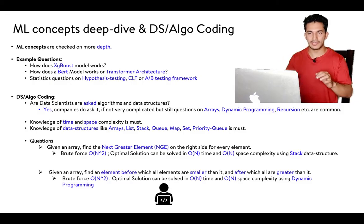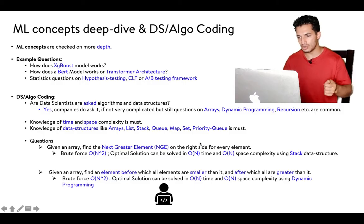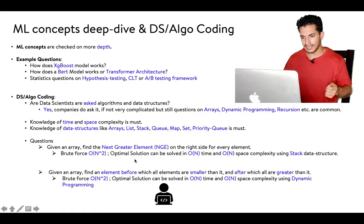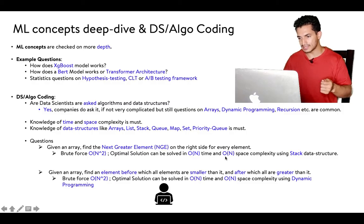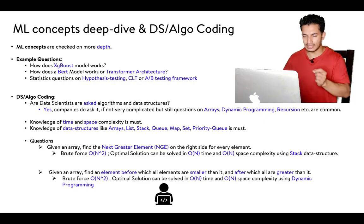The DS/Algo round also tests whether the person can code — whether they have the capability to convert logic into code. A sample question: given an array, find the next greater element on the right side of every element. A brute force O(n²) solution is possible, but the optimal solution is O(n) time and O(n) space using a stack data structure, where the stack always holds the next greatest element for a given element.